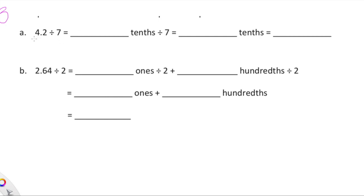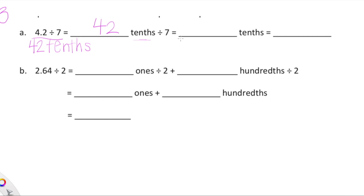We have the expression 4.2 divided by 7, or we can rename that as 42 tenths divided by 7. We're going to rewrite it a couple of times and then fill in our final answer. Rewriting these expressions a few different times in unit form is really going to help us understand what it means to divide 42 tenths into seven equal groups. So 4.2 divided by 7 is equal to 42 tenths divided by 7.